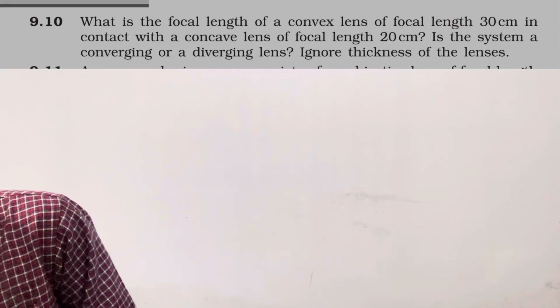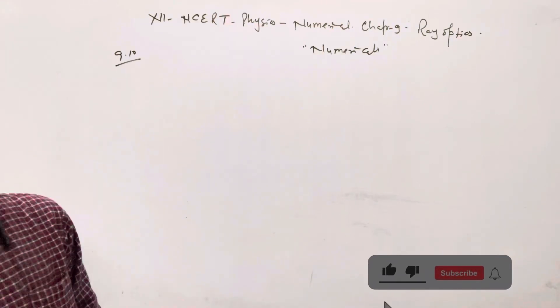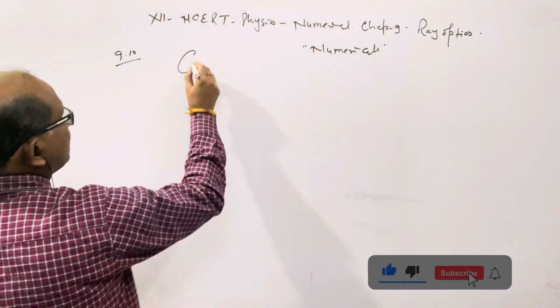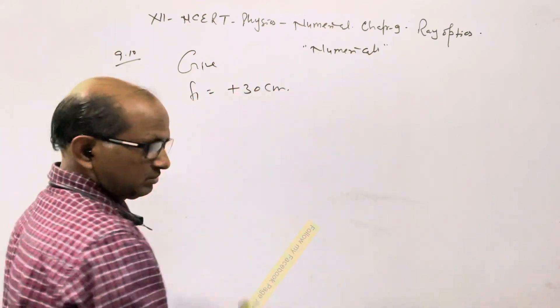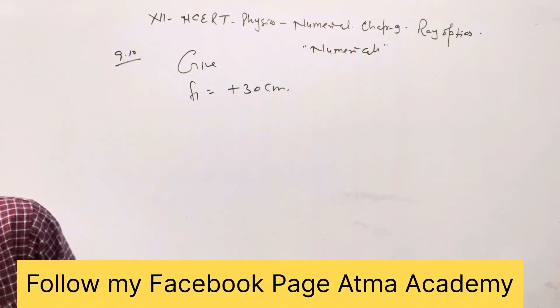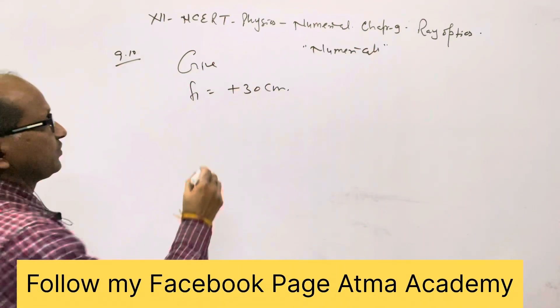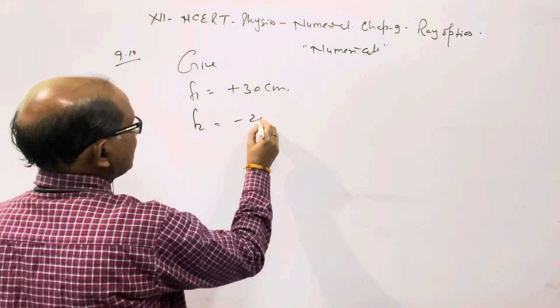The first lens is a convex lens with focal length 30 cm, so we're given f1 = +30 cm. The second is a concave lens with focal length 20 cm, so f2 = -20 cm.